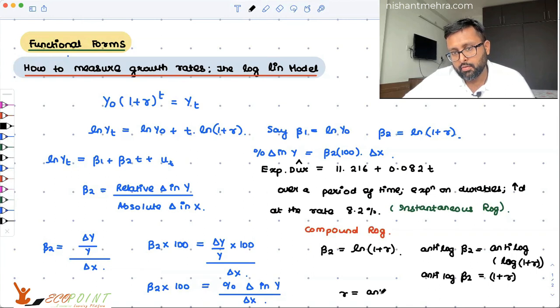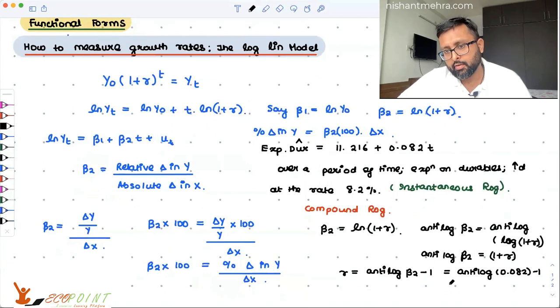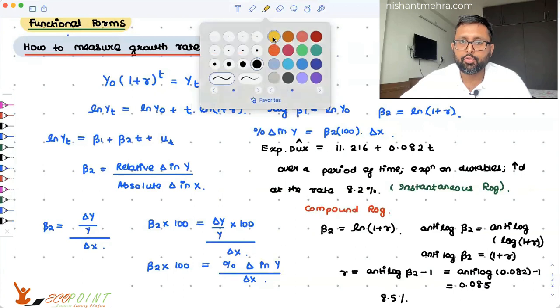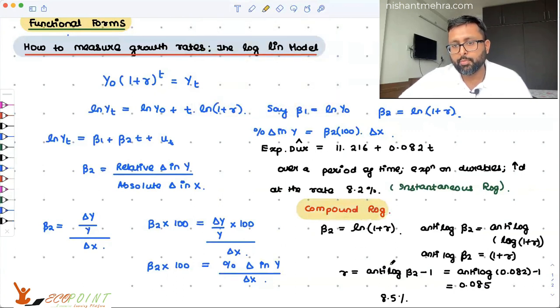So what is r? That is antilog beta 2 minus 1. It means antilog of this guy 0.082 minus 1. And when you do that, you actually get 0.085. So again, for the compound rate of growth, you need to multiply this value with 100. That will be 8.5%. So the compound rate of growth is 8.5%, while your instantaneous rate of growth is 8.2%. This is what the instantaneous rate of growth is.